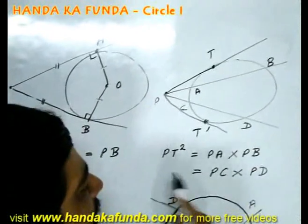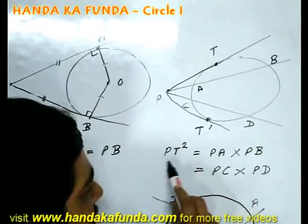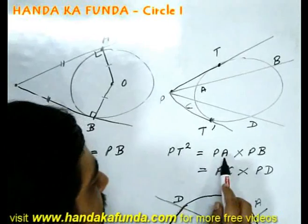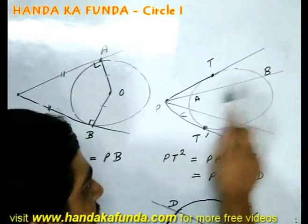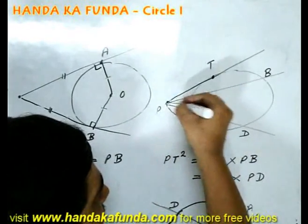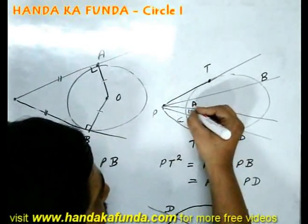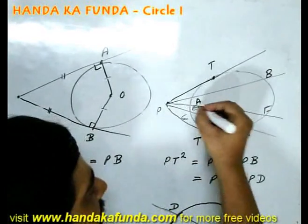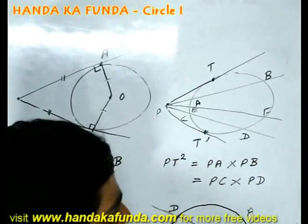That is PT square, square of the length of the tangent, will be equal to PA into PB. That will be equal to PC into PD. That will be equal to, say I had another secant PEF, that would have been equal to PE into PF. That always remains a constant.